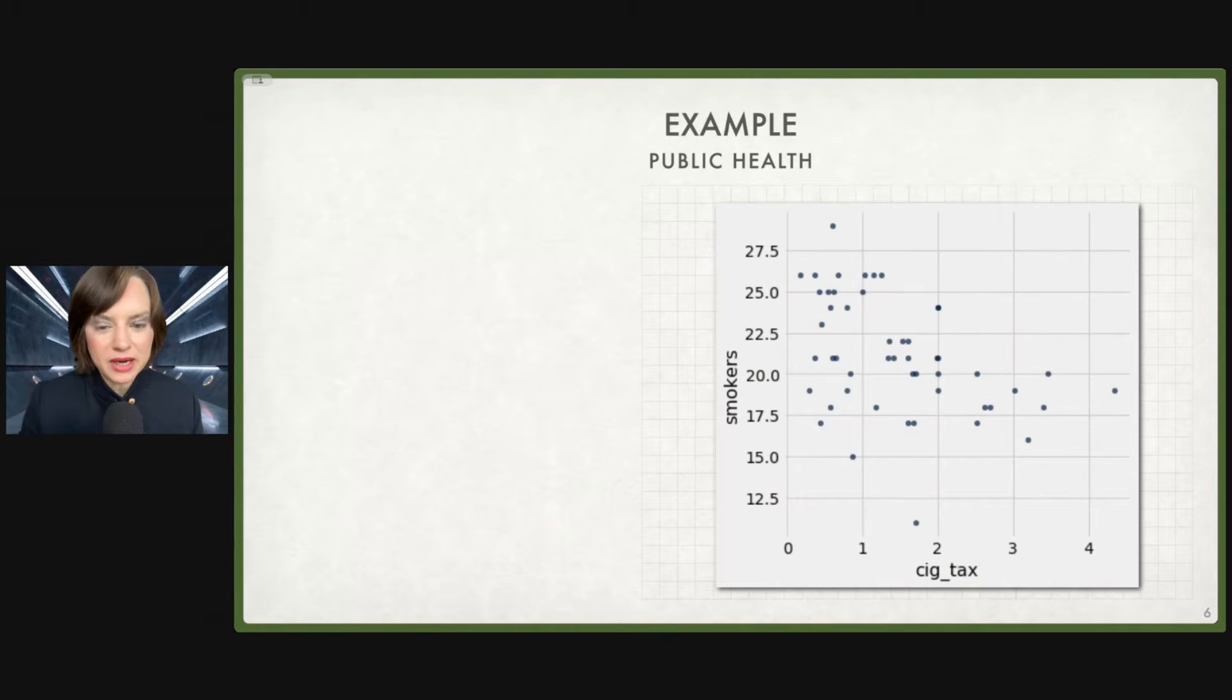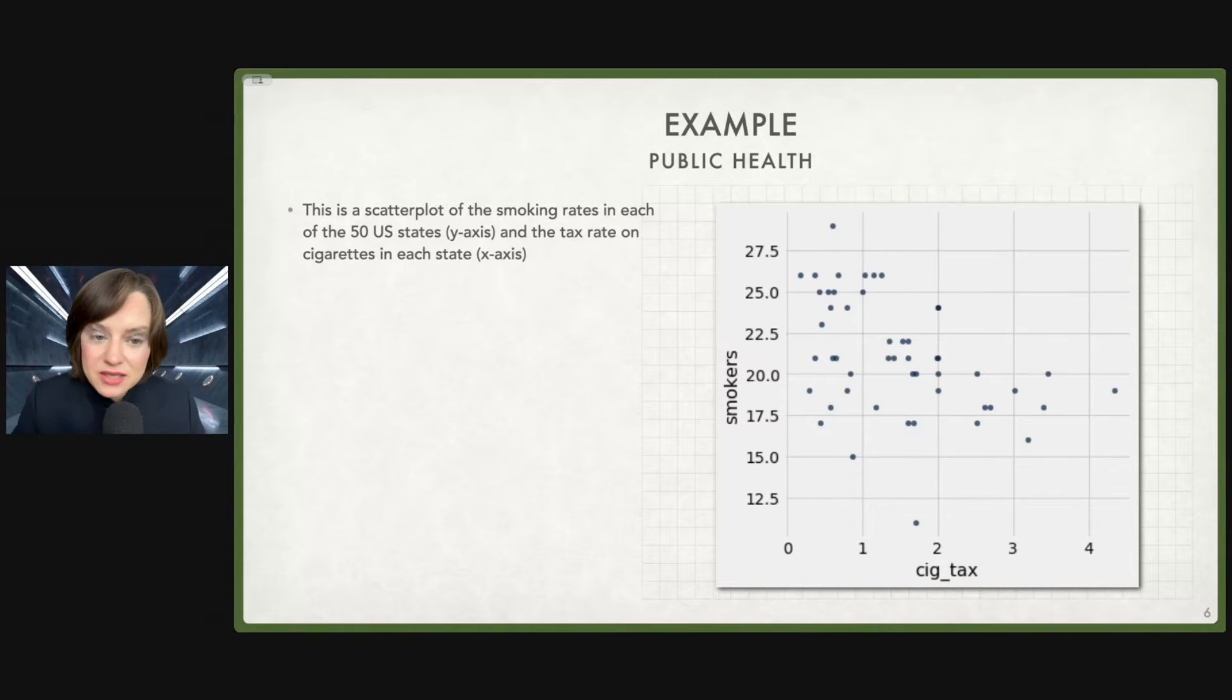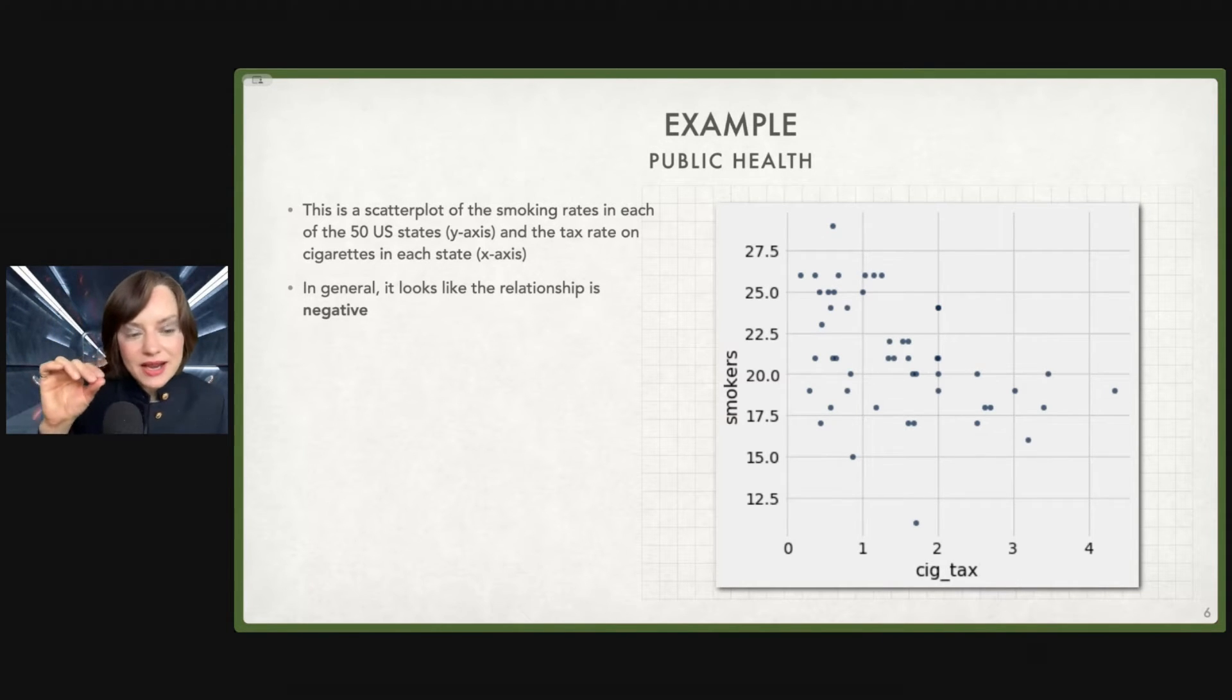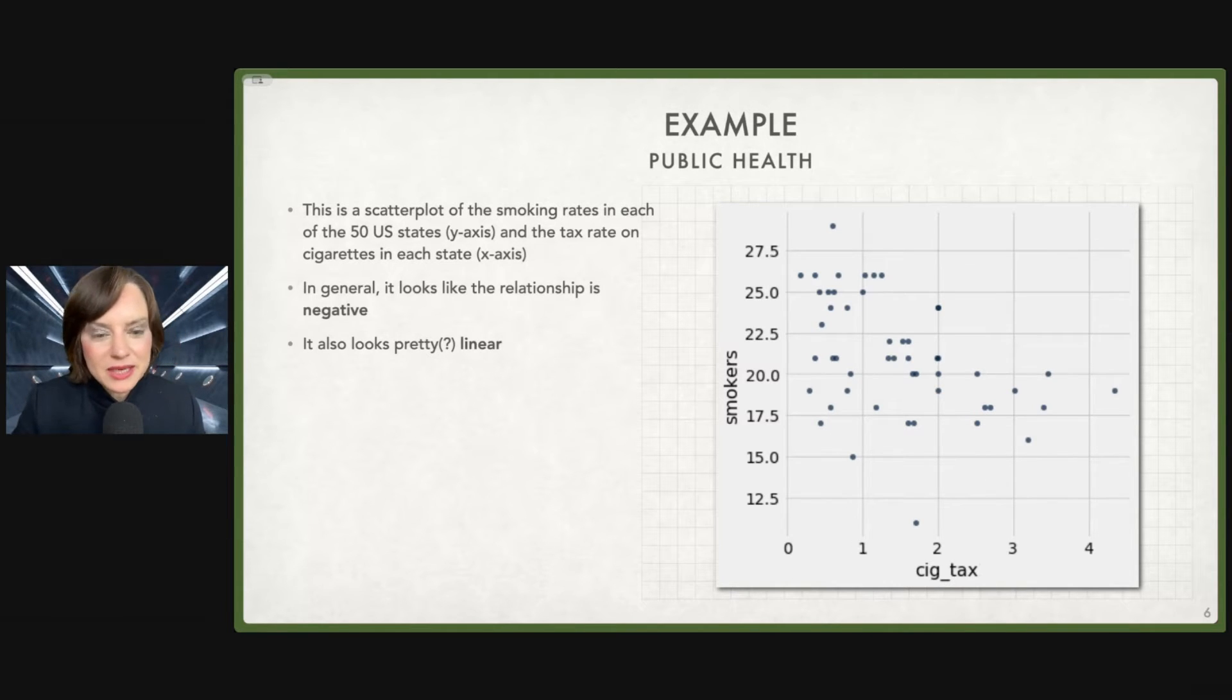All right, here's an actual example. We'll take it from public health. Shout out to my former co-instructor Professor Arthur Sperling for this great example. So here's a scatterplot of the smoking rates in each of the U.S. 50 states, that's the Y-axis, and the tax rate on cigarettes in each state, that is our X-axis. So in general, it looks like the relationship is negative. As cigarette taxes increase in a state, we see that the percentage of people who smoke goes down. That's our association. It looks pretty linear. The answer is we take a good old look at it. For the most part, that is actually what we do.